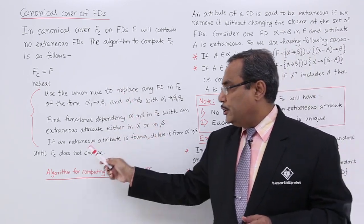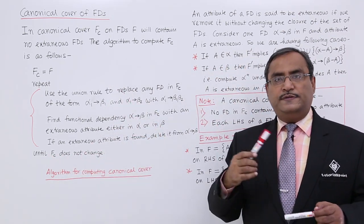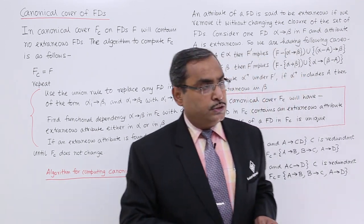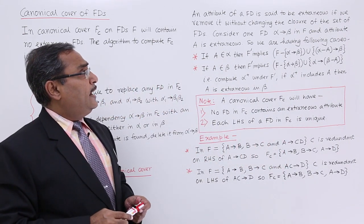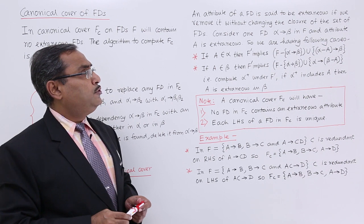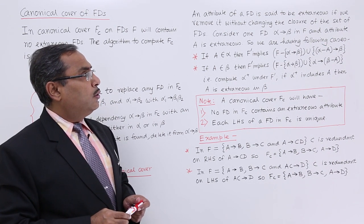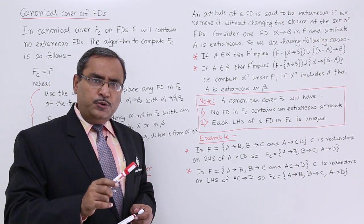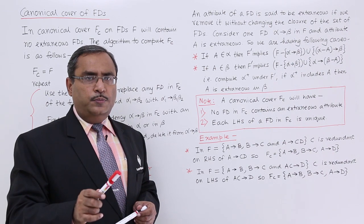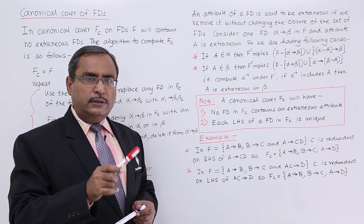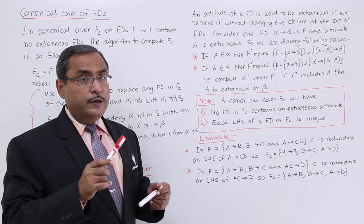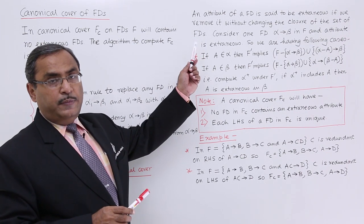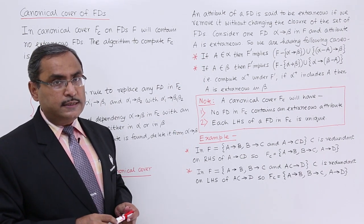This process will be continued until fc does not change — if fc keeps changing the process continues. An attribute of a functional dependency is said to be extraneous if we can remove it without changing the closure of the set of functional dependencies. That means one attribute will be considered redundant or extraneous if, after its removal, computing the closure of the FDs gives back all the functional dependencies as before.